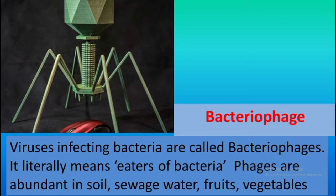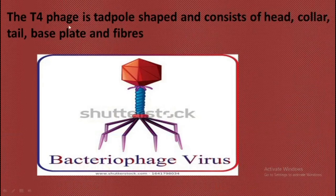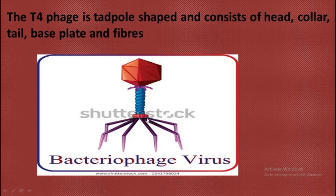First, bacteriophage. The word bacteriophage means 'eaters of bacteria' — bacteria are eaten by the phage, which is a virus. The image you are seeing here is a bacteriophage. Phages are abundant in soil, water, fruits, and vegetables. The T4 phage is tadpole-shaped and consists of a head, tail, base plate, and tail fibers — about six tail fibers in total.